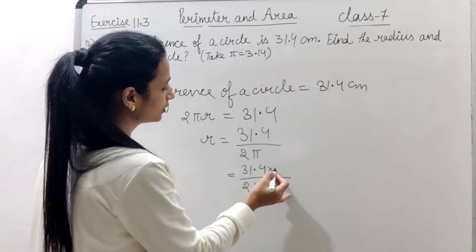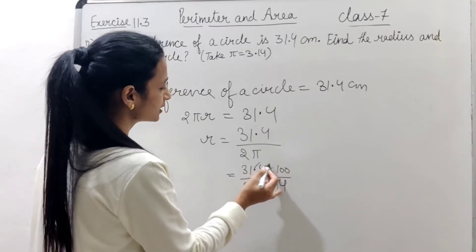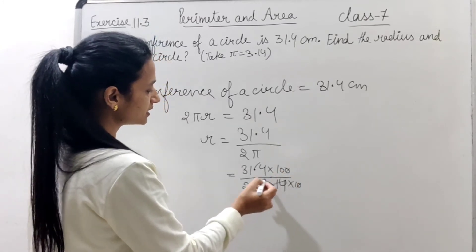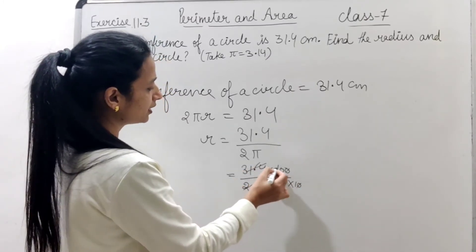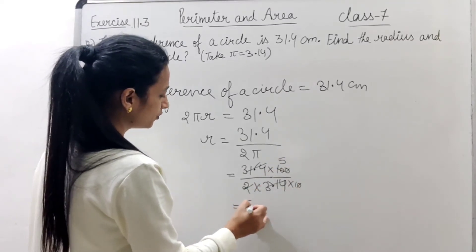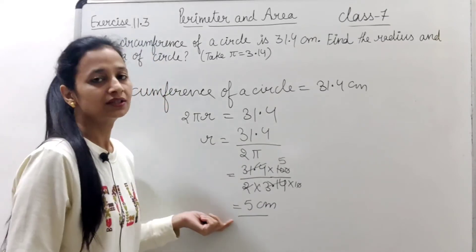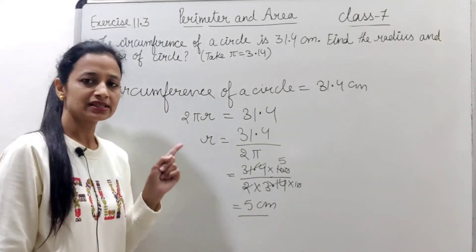If we remove the decimal points, 100 here and 10 here, 10 and 10 cancel. This cancels with this. 2 fives make 10. Then we will get 5 cm. And what is this? Radius of the circle.